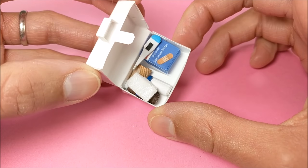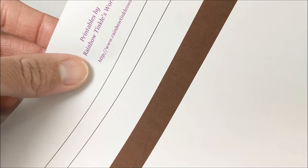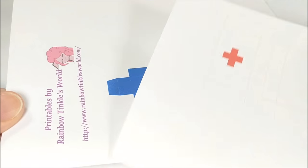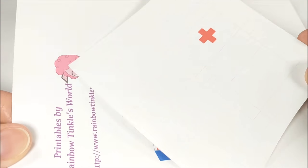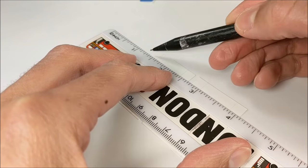To make this first aid kit and accessories, I start by printing out the printables—you can access them by clicking the link in the description. I print the medicine bottles on regular paper, and the first aid kit and band-aid on cardstock so it's more durable, then cut them out.